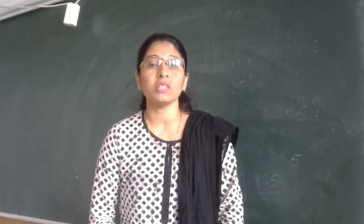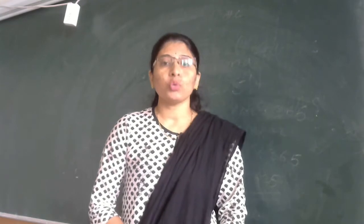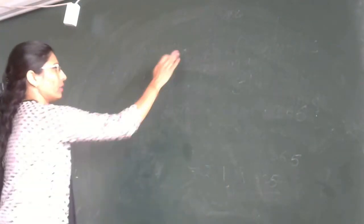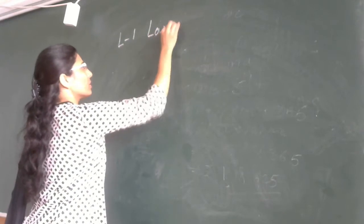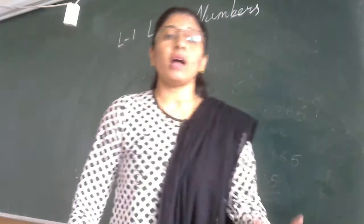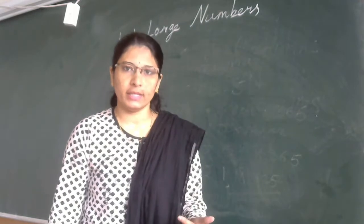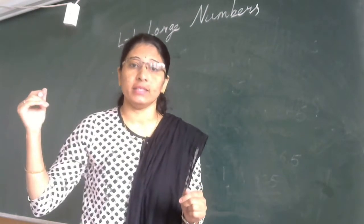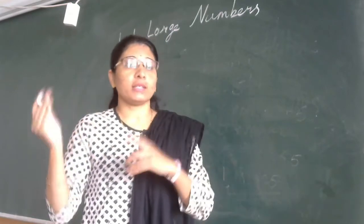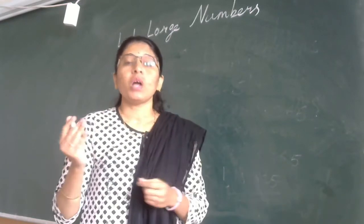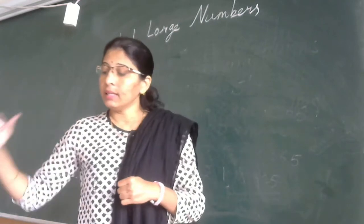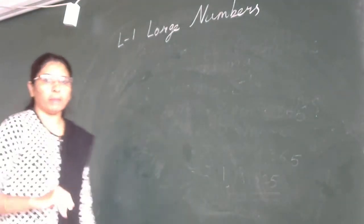Good morning. In our previous class we saw Lesson 1: Large Numbers. Before going to the next lesson, let us revise that lesson first. The important concepts in Lesson 1 are large numbers — we have learned four to five digit numbers previously, and now large numbers means six, seven, eight, nine digit numbers. How to read, write, find predecessor and successor, how to expand, compare, and order them — greater than, less than, ascending, descending — these are the things covered in large numbers.